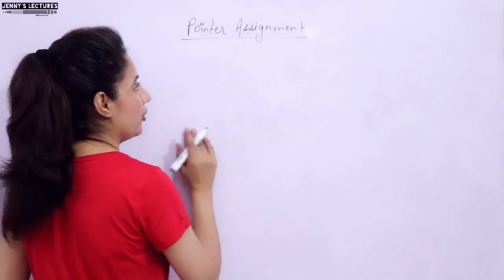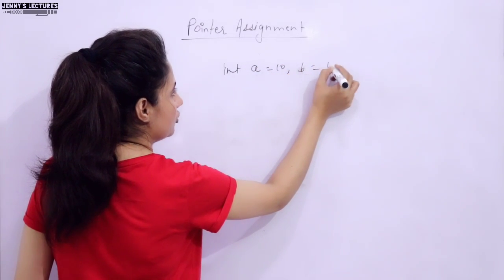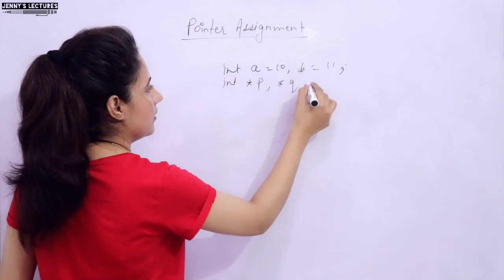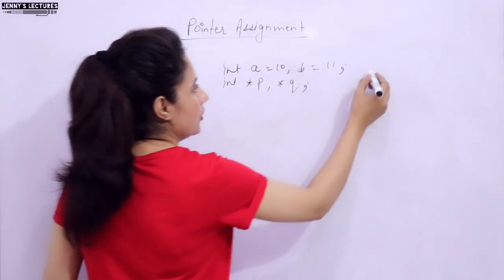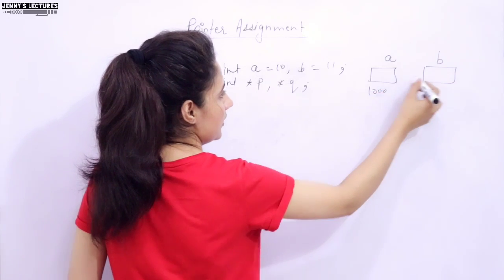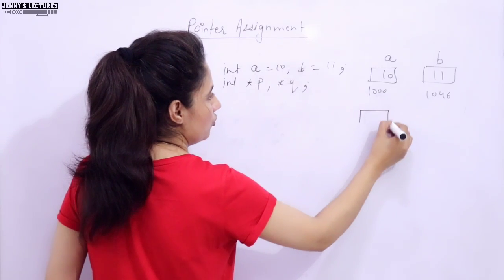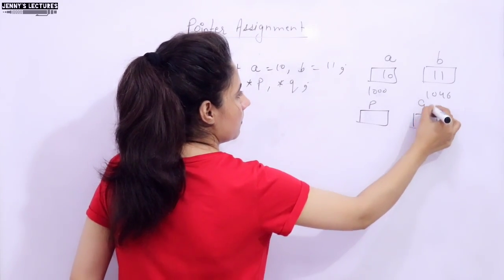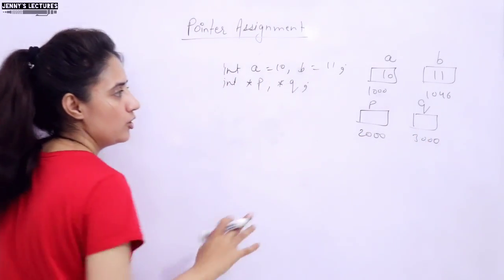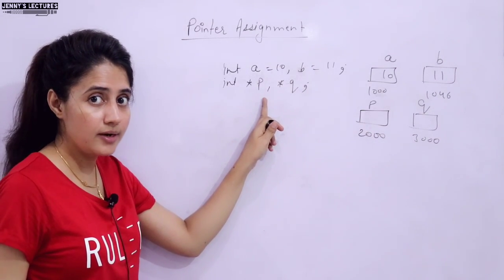To demonstrate pointer assignment, I'm taking two variables: a = 10 and b = 11, and two pointers p and q. In memory, suppose a is at address 1000 and b is at address 1046. Pointer p has an address of maybe 2000 and q maybe 3000. Currently p and q are not initialized — they are not pointing to anything yet.